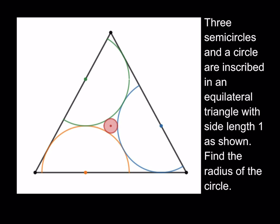I'll make some connections. Let's connect one of the centers to one of the sides of the triangle — this is going to be a right triangle. Let's call this r for now. I know that this is 60 degrees and this is 30 degrees, so this gives me the hypotenuse. If the longer leg is r, the longer leg is √3 times the shorter leg, so the shorter leg is r√3/3. Therefore the hypotenuse is going to be 2√3/3 multiplied by r.